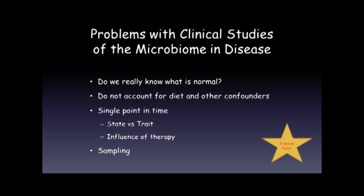Many of these studies that correlate a change in the microbiome with a disease state have problems. Firstly, do we actually know what is normal? I would argue that we still do not know what is the truly normal microbiome for a given individual. Many studies do not account for diet and other confounders — in irritable bowel syndrome, for example, what we see in the microbiome may reflect the patient's particular diet rather than IBS itself. Furthermore, most studies are not longitudinal — they're a single snapshot in time, which can show a relationship but by no means can show causation. They cannot separate state from trait, nor account for the influence of any particular therapy for that disease state.